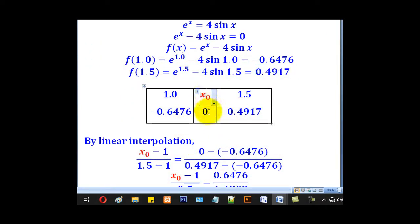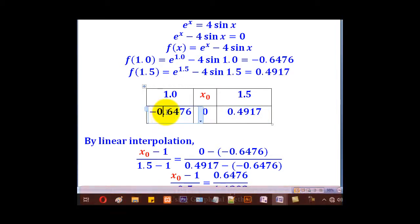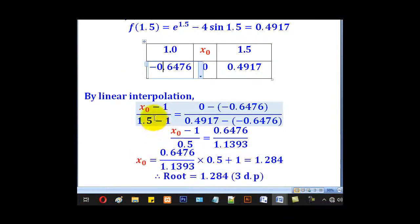x₀ is not known but corresponds to 0. In this case, we shall say (x₀ - 1)/(1.5 - 1) = (0 - (-0.6476))/(0.4917 - (-0.6476)).